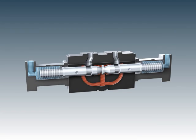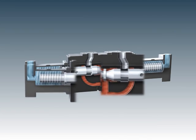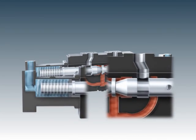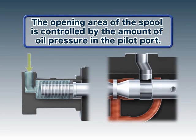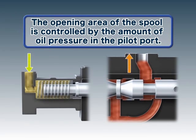The spool continues to move until the pressure applied to the pilot port balances with the return spring on the opposite side, changing the opening area which in turn adjusts the flow rate.